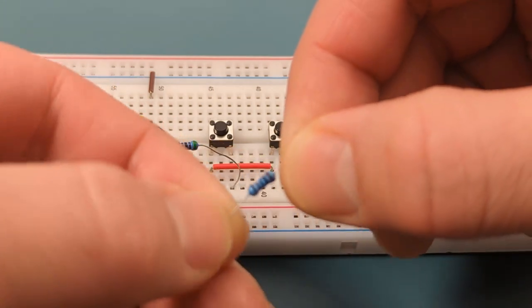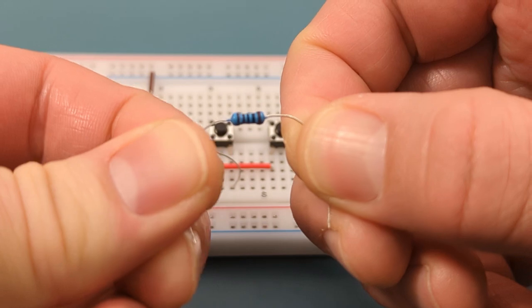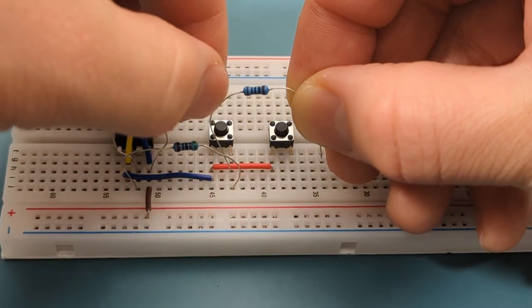Bend the ends of a 1000 ohms resistor. Insert the 1000 ohm resistor between the outermost legs of both switches.